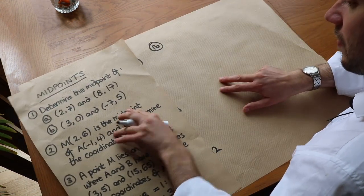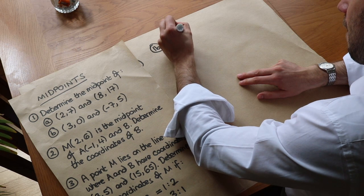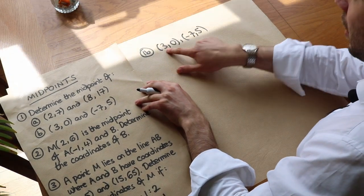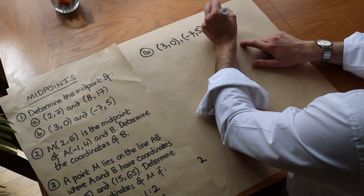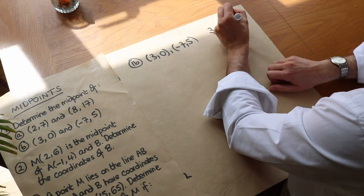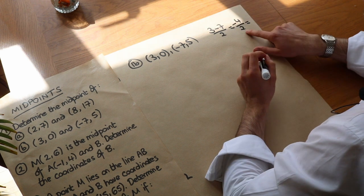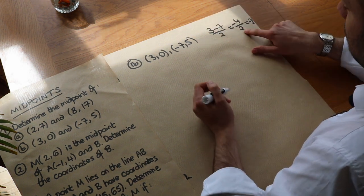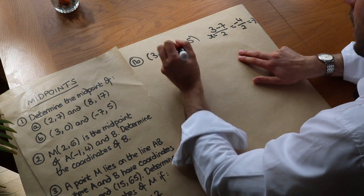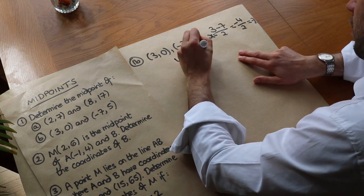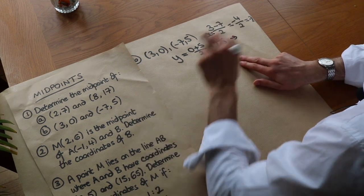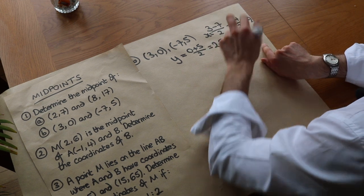So 1b: we've got (3, 0) and (−7, 5). For the x values, it's 3 plus negative 7 — that's effectively 3 minus 7 — divided by 2. So that's −4 over 2, and −4 divided by 2 is just −2, because a negative number divided by a positive number is negative. For the y values, it's 0 plus 5 divided by 2, and that's 5 over 2, or 2.5. So the midpoint is (−2, 2.5).